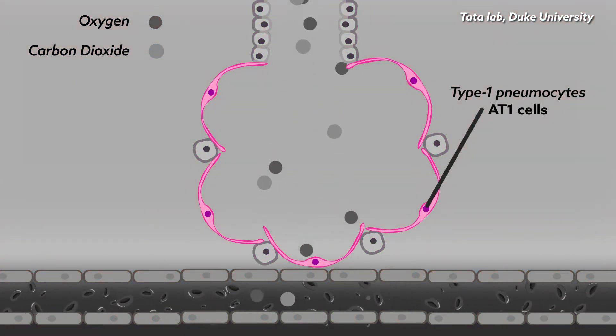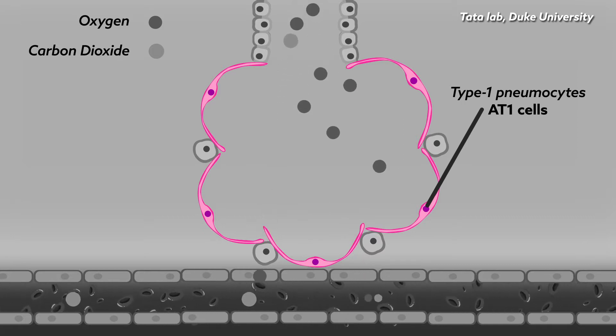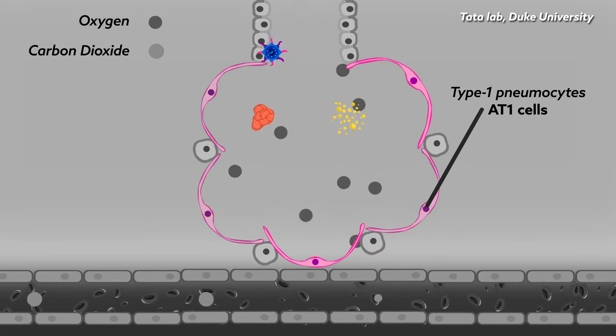Because they're so delicate and thin, these cells are vulnerable to damage by pollutants, viruses, and bacteria.